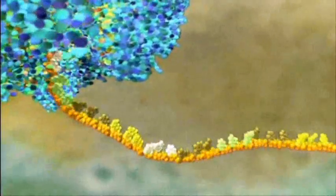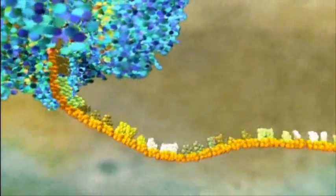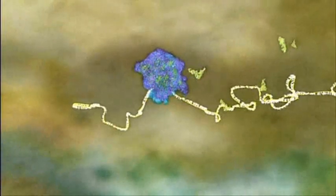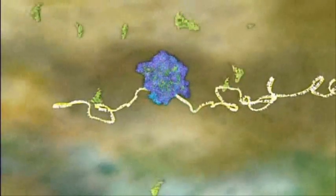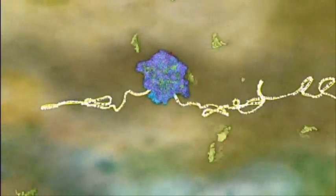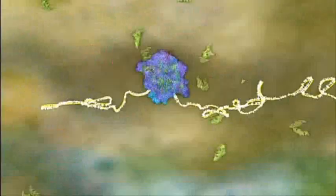It translates the genetic information in the RNA into a string of amino acids that will become a protein. Special transfer molecules, the green triangles, bring each amino acid to the ribosome.